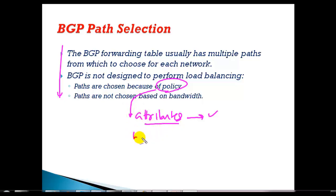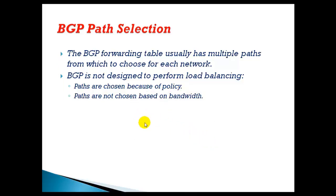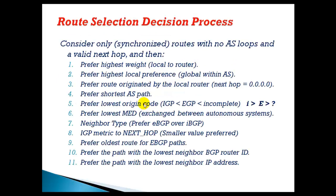We have seen attributes like weight and local preference. These two attributes define how to exit the AS. Whichever route has the higher weight or higher local preference will be considered the best route. When you have multiple attributes applied to specific paths, weight is the highest preferred attribute over any other.